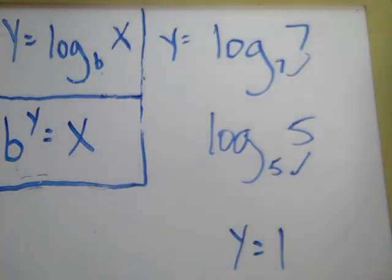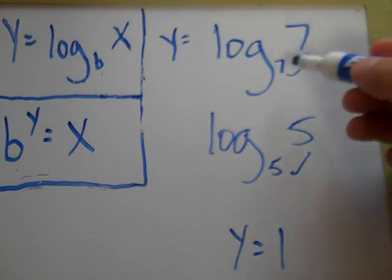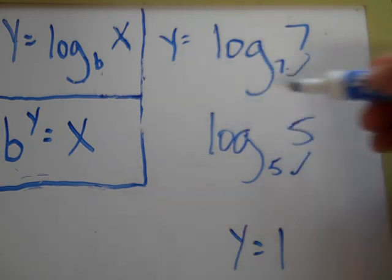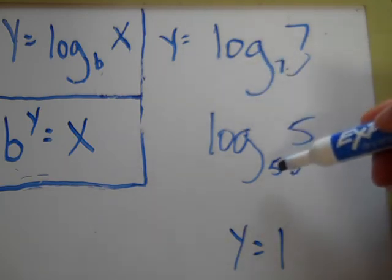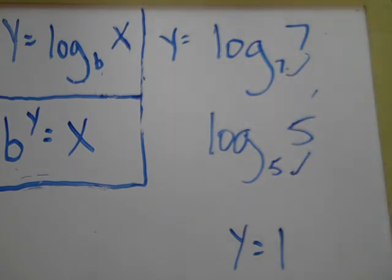But besides all that, if you've seen a logarithmic expression where the base and the x are the same thing, then you automatically know that equals 1. It doesn't matter what number it is: 10, 5, 15,000, whatever. If they're the same, it equals 1.